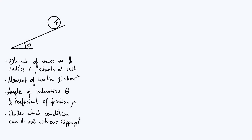Hello everyone. It's fairly common in rigid body dynamics problems to be told to assume that an object rolls without slipping. However, we don't usually stop and think about whether this assumption of rolling without slipping is actually valid, and so what I thought we could do in this video is to investigate in some detail the validity of the no-slip assumption for one particular case.